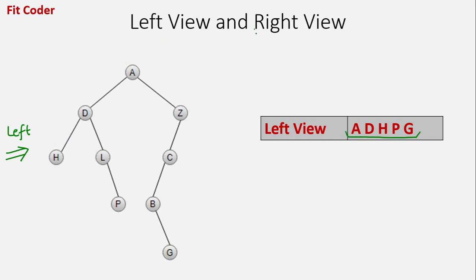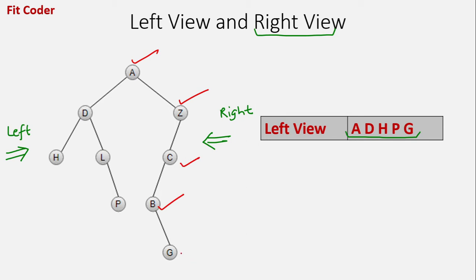For the right view, we have to see this tree from the right direction. The nodes that will be visible as part of the right view are A, Z, C, B, and G. Because Z is in front of D, so D will be hidden. C is in front of H and L, so these will be hidden. And B is in front of P, so P will be hidden.